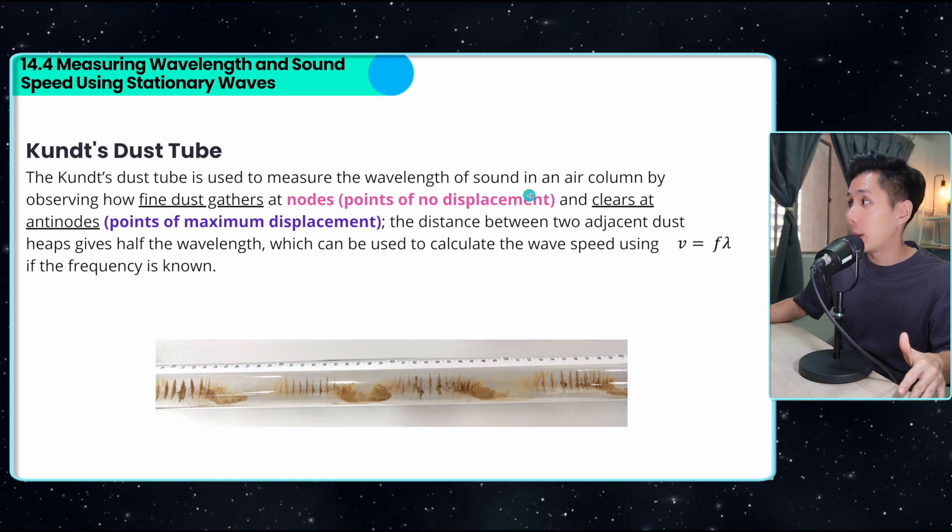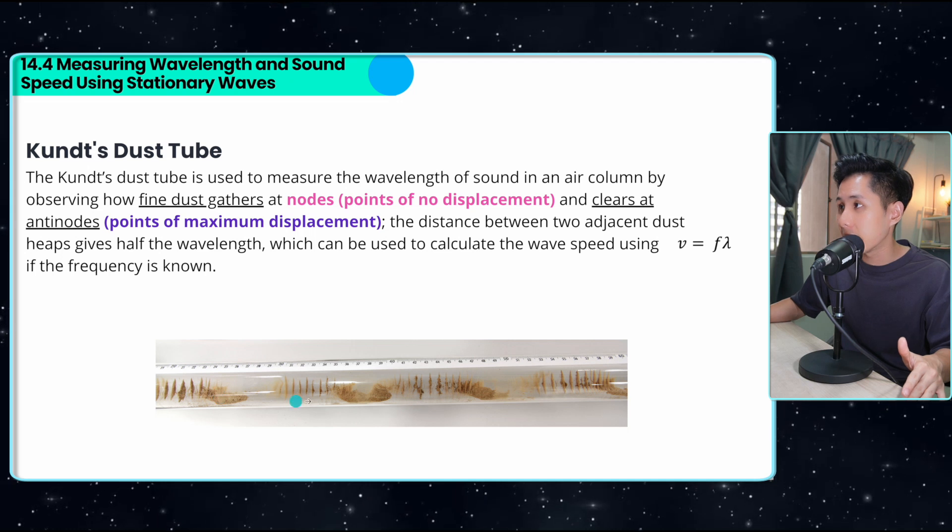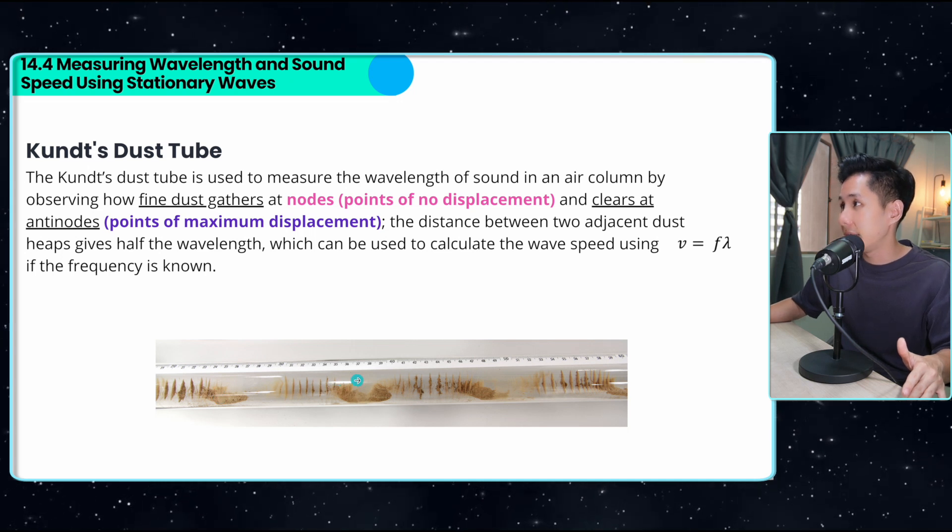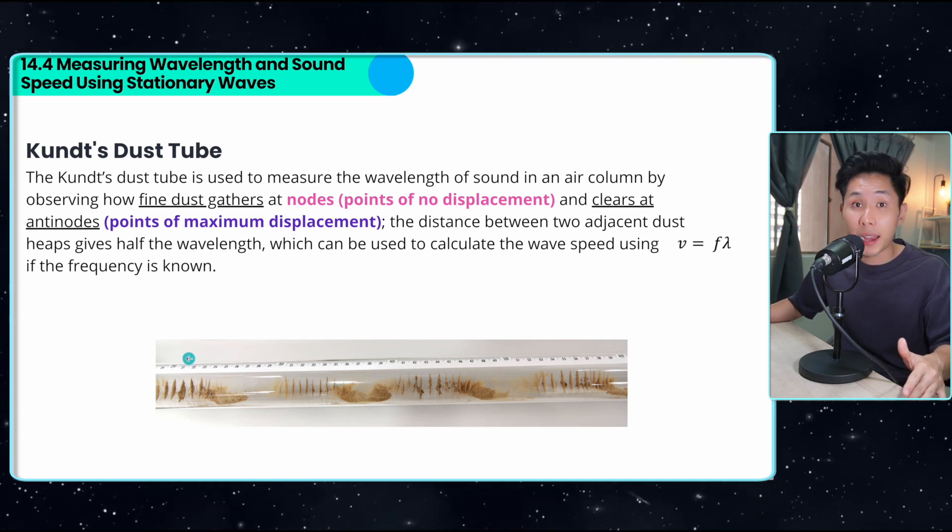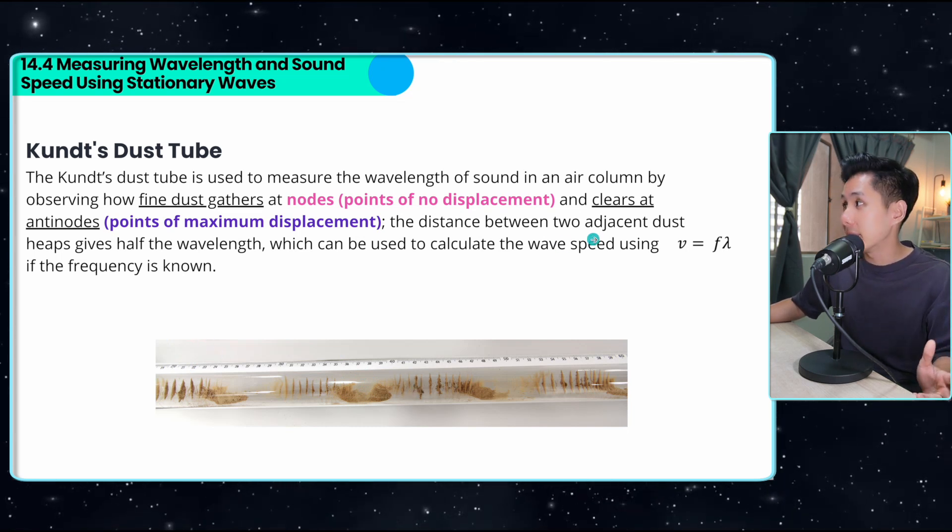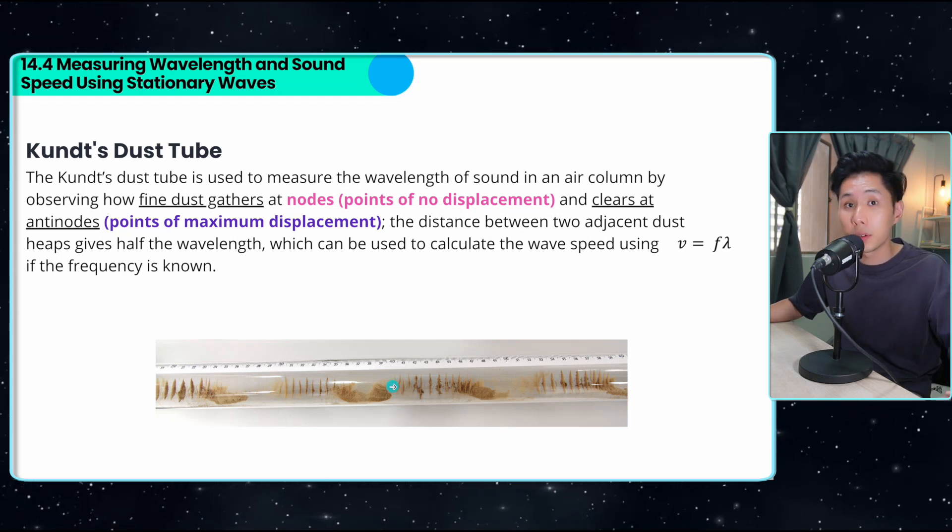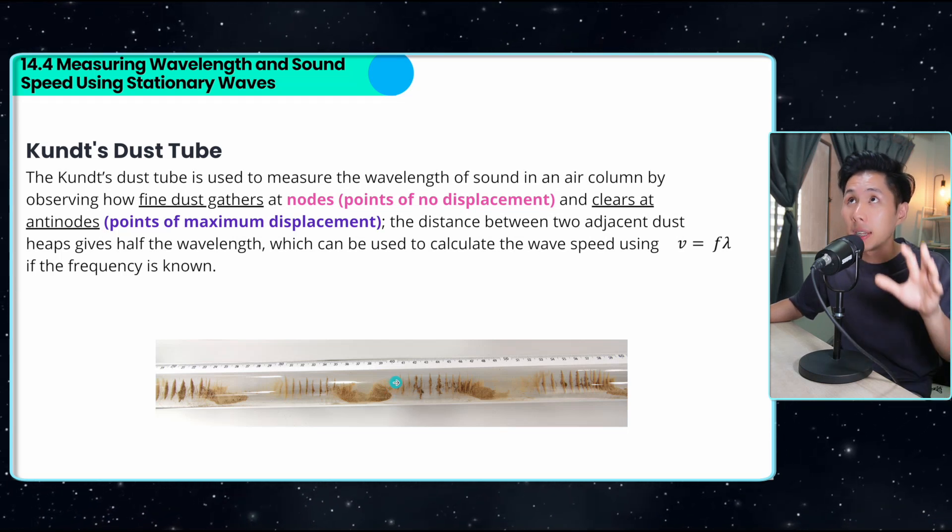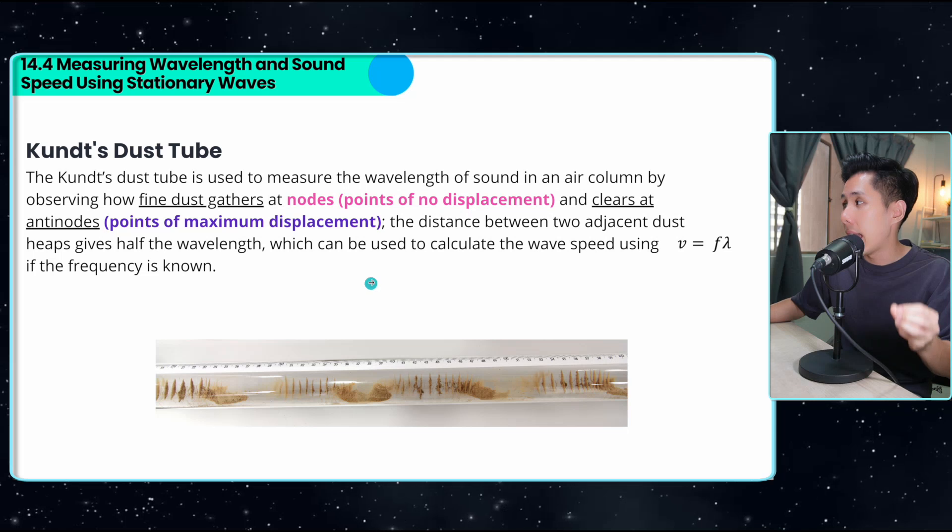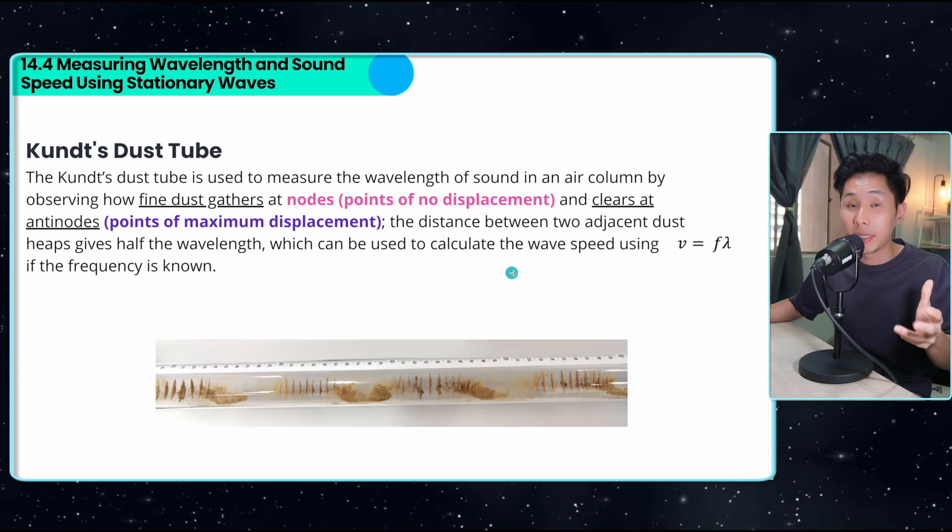It is used to measure the wavelength of sound in an air column by observing how fine dust gathers at the nodes and clears at the antinodes because there is a displacement in antinodes. And that's how it looks like. And the distance between two adjacent dust heaps will then be measured, which will give you the half the wavelength. Remember, the distance between nodes is half the wavelength. And with that information, they can just apply this formula to calculate the speed of the wave.